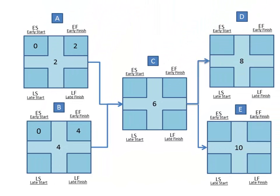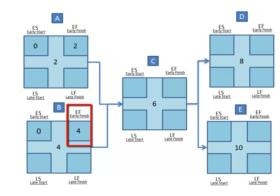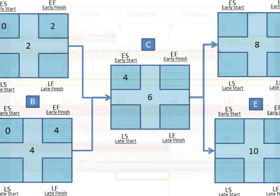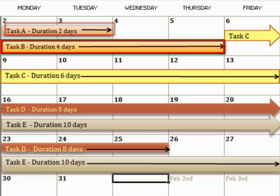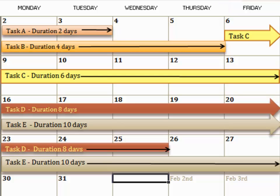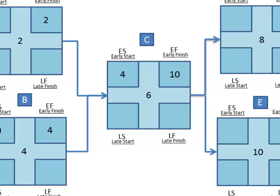Now we determine the earliest time that Task C can start. C is dependent on both A and B finishing. Out of these two predecessors, which one finishes last? That's B. So in the forward pass, if there are multiple predecessors to a successor, you take the highest early finish, which in this case is four. Task C has to wait the longest for B to complete before it can begin — A will be done first at the end of day two on Tuesday, and B ends two days after A at about 5 p.m. Thursday. C can't start when A is completed because it is still waiting for Task B to finish. Add the duration of Task C, which is 6, to the earliest start of 4 to get the early finish of 10.